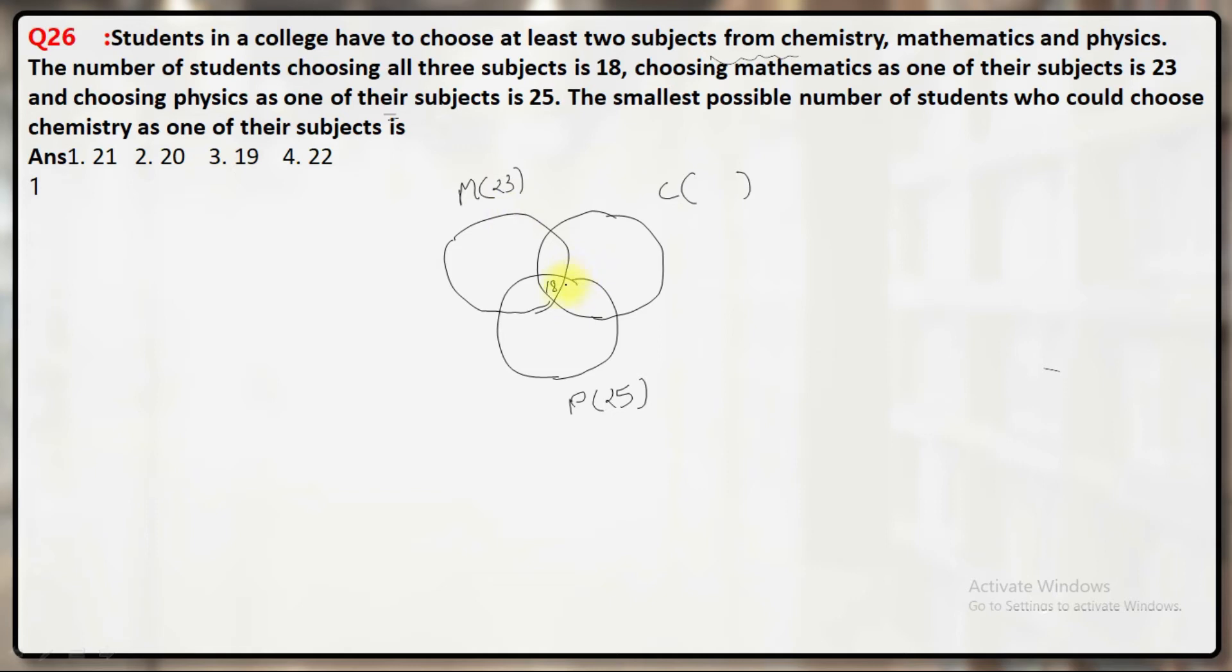Now you want to make this circle equal to 23. 18 is already there, so I will put 5 here. 18 plus 5 will become 23. But the circle of physics must be equal to 25, so I need two more. I cannot put two in just one subject because every student should choose at least two subjects, so I will put two here.